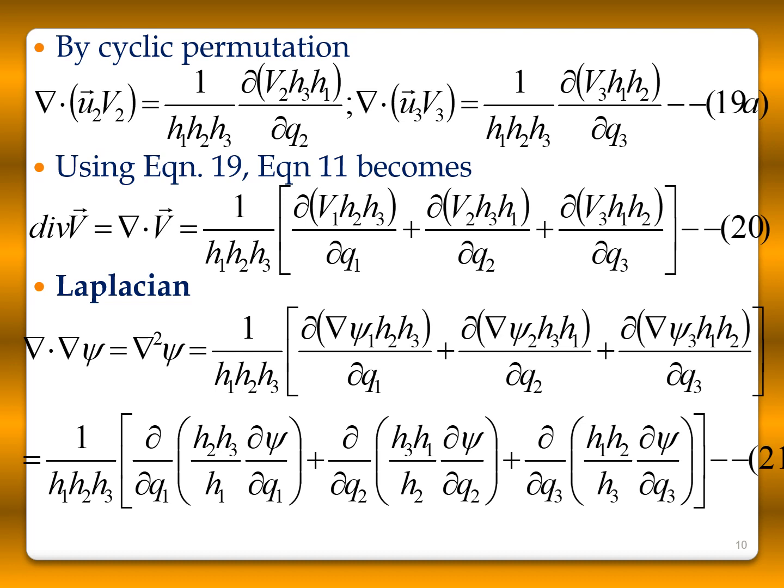For the Laplacian del·(del ψ), we apply both the gradient and divergence formulas already derived. This gives: del²ψ = (1/(h1 h2 h3))[∂/∂q1(h2 h3/h1 · ∂ψ/∂q1) + ∂/∂q2(h3 h1/h2 · ∂ψ/∂q2) + ∂/∂q3(h1 h2/h3 · ∂ψ/∂q3)].